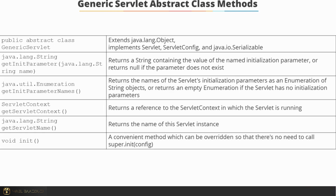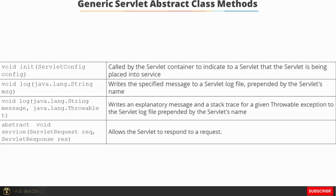getInitParameterNames returns the names of the servlet's initialization parameters as an enumeration of string objects, or an empty enumeration if the servlet has no initialization parameters. getServletContext returns a reference to the servlet context in which the servlet is running. getServletName returns the name of this servlet instance. The void init method is a convenient method that can be overridden without needing to call super.init. There is also a log method for writing messages and stack traces, and a service method that allows the servlet to respond to a request.